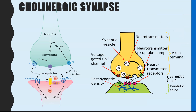This leads us to one example of a type of synapse: the cholinergic synapse, which is the only example in detail you need to know about. It's exactly the process we went through — you just need to know the name of the neurotransmitter and the enzyme which breaks it down. The neurotransmitter is acetylcholine, and the enzyme that breaks it down is acetylcholinesterase. That breaks down acetylcholine into choline and acetate, which are the two molecules recycled back into the pre-synaptic knob to make more acetylcholine.